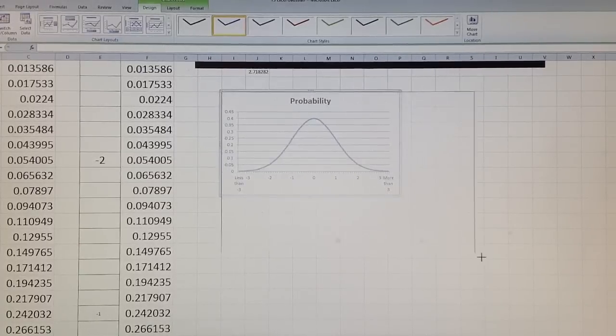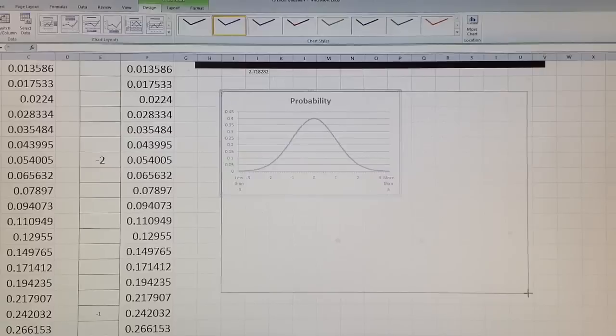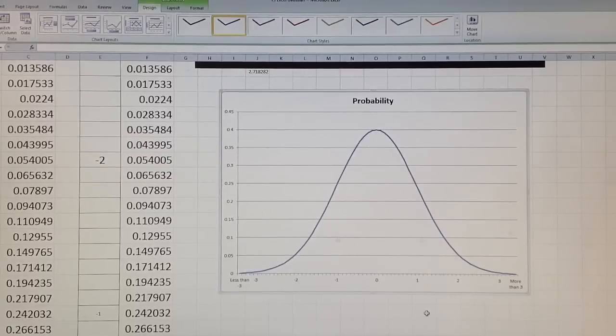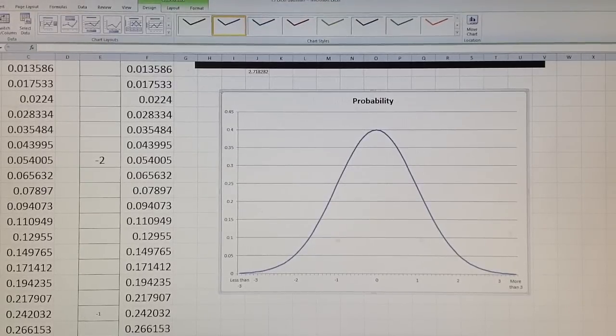Let's maximize. And this is the normal distribution from negative 3 to positive 3. You can see that this is a beautiful bell shape. Now, what else is important for normal distribution?